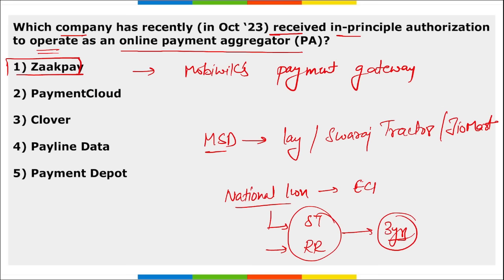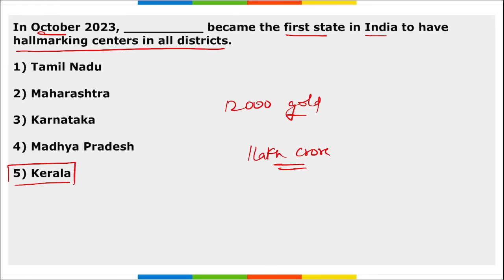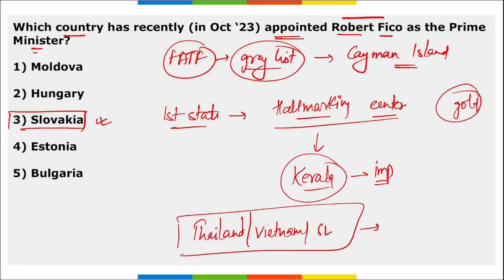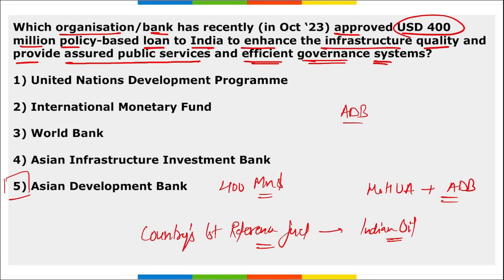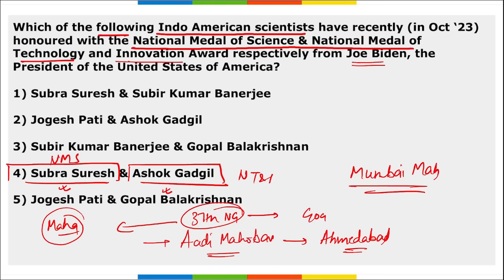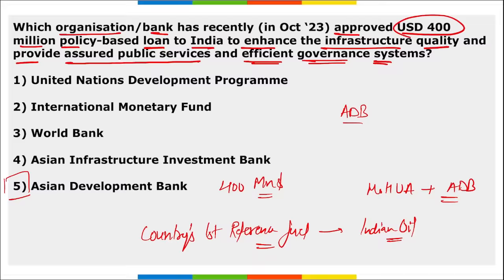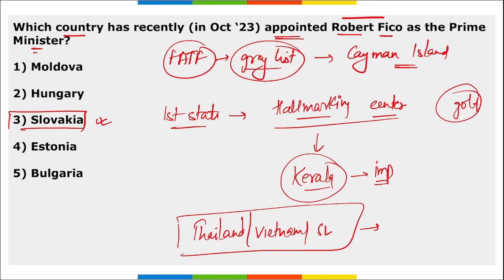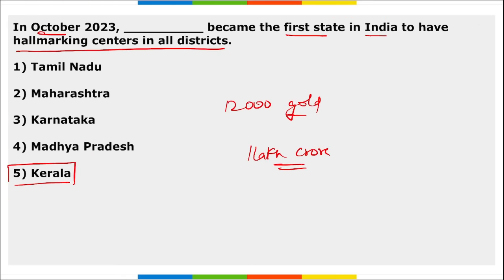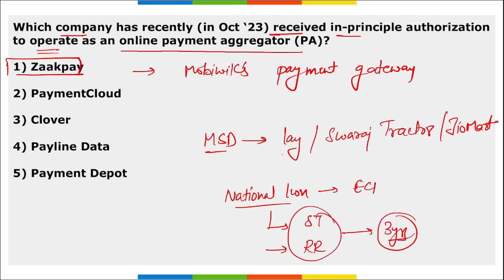Mahendra Singh Dhoni was appointed as brand ambassador of Lees, Swaraj Tractors, JioMart, as well as State Bank of India, which appointed him as their official brand ambassador.